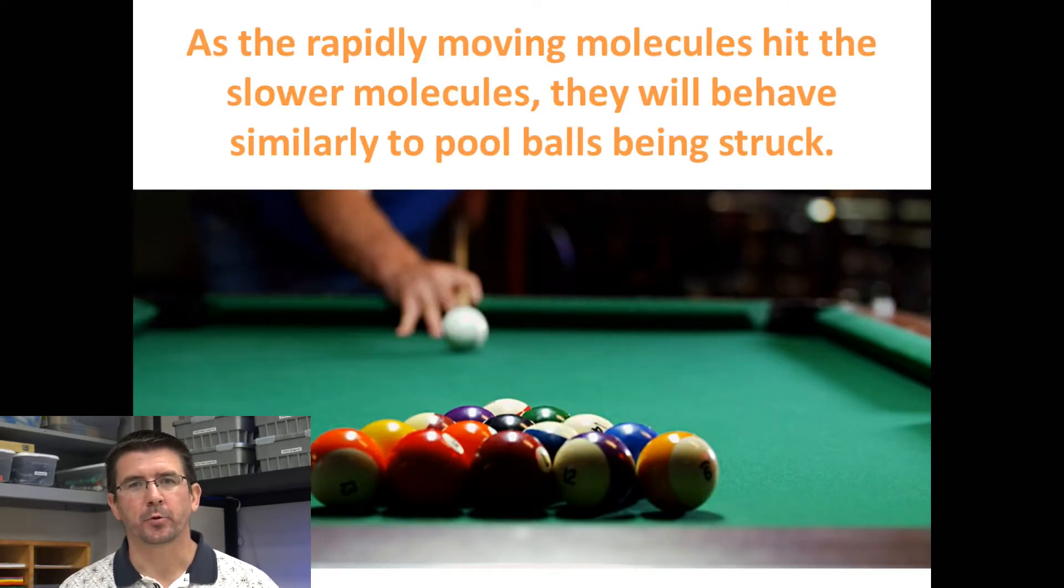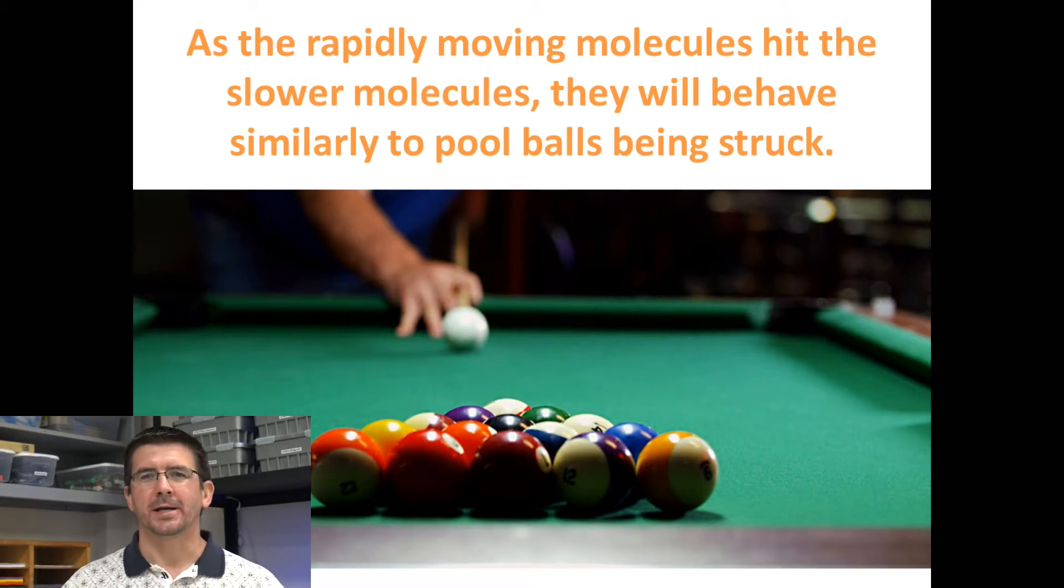A good example that represents what's going on at the molecular level is playing pool. When you first take that cue ball and hit the rack of balls, the balls are at rest, they're not moving until that cue ball hits them. But then they start moving rapidly all over the place because the rapidly moving cue ball transferred its energy into all the pool balls to make them all move. That's essentially what happens on the molecular level. A rapidly moving warm molecule will bump into cooler molecules and cause them to start moving more rapidly, transferring most of its energy to the cooler molecules.